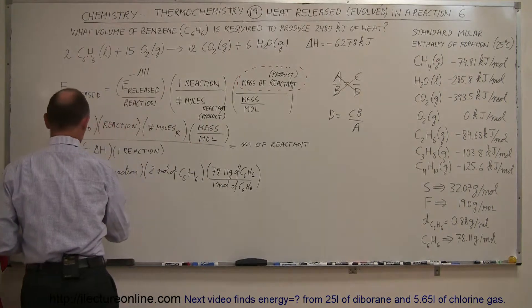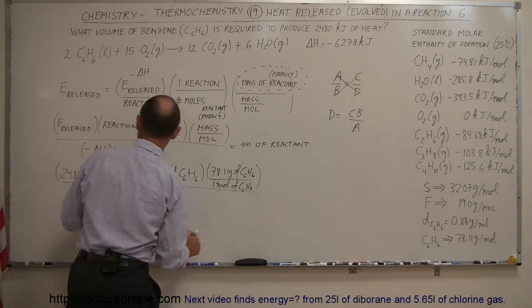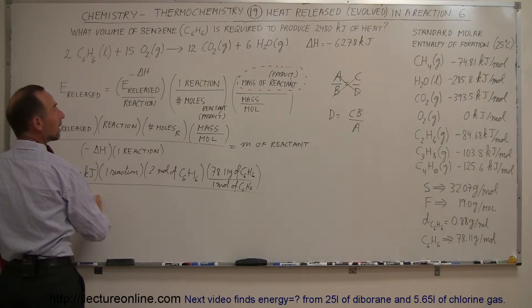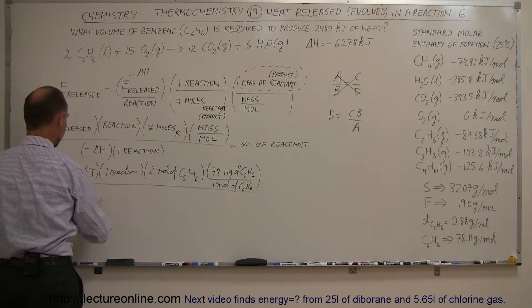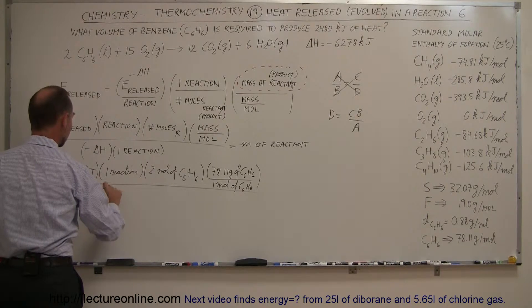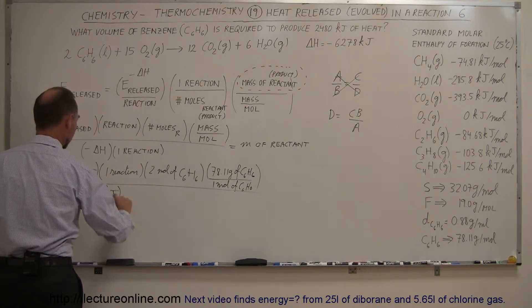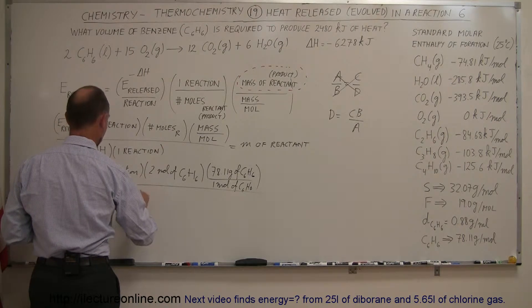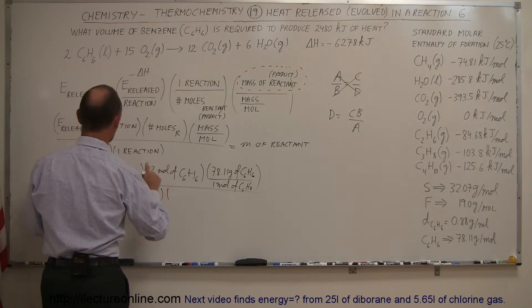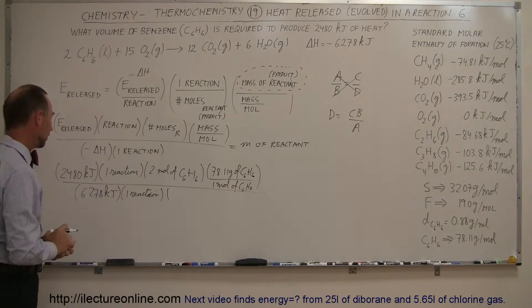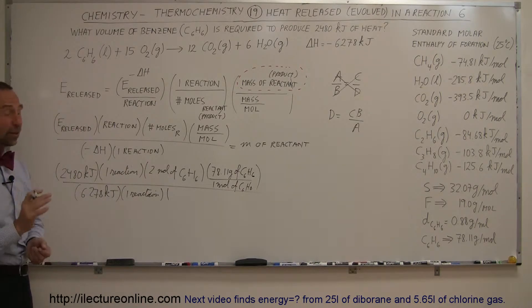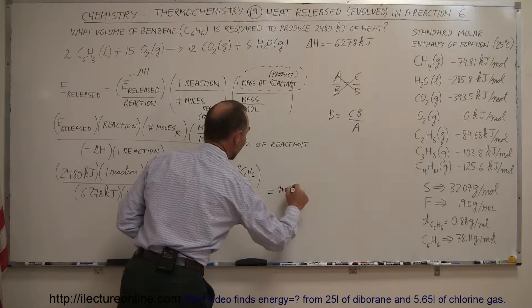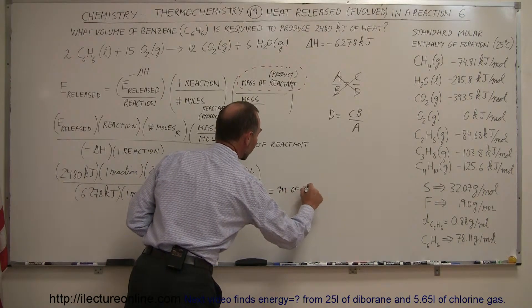We divide the whole thing by the enthalpy change of the reaction, so it would be, let's see here, the negative of 6,278 kilojoules for that reaction times one reaction, and we multiply that, and we have that right there, and now we're ready to go ahead and calculate, that would then equal the mass of the reactant.